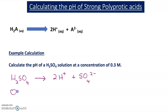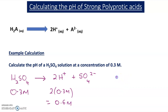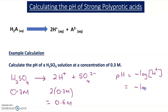The ratio of sulfuric acid molecules to H⁺ ions is 1 to 2. So if we have a concentration of 0.3 mol dm⁻³ for sulfuric acid, the concentration of H⁺ ions is two lots of 0.3, which is 0.6 mol dm⁻³. To work out the pH: pH = −log(0.6) = 0.22.